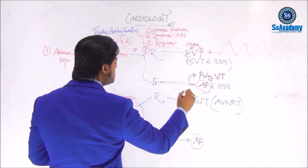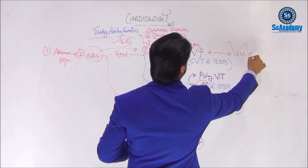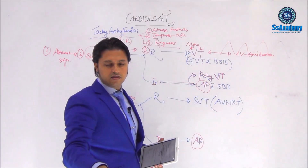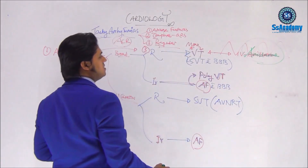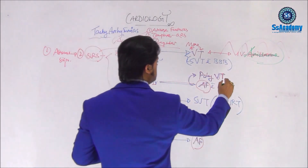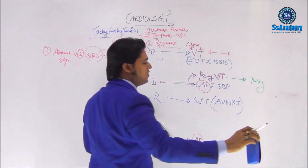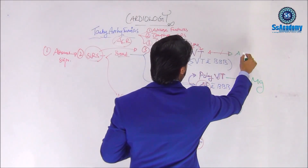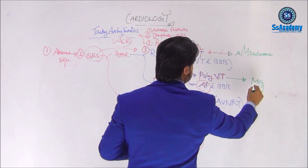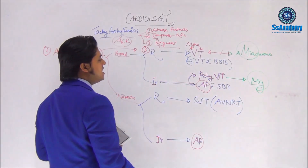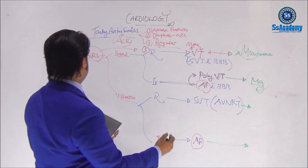If it is VT, the treatment is IV amiodarone. Remember: amiodarone is the treatment of choice for monomorphic VT. For polymorphic VT, the treatment is IV magnesium only. So: monomorphic VT → amiodarone; polymorphic VT → magnesium. Supraventricular tachycardia and atrial fibrillation management will be discussed in the next lecture.